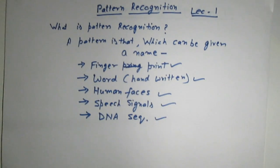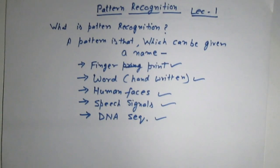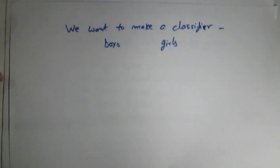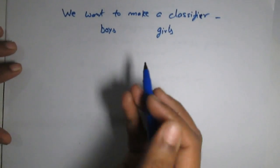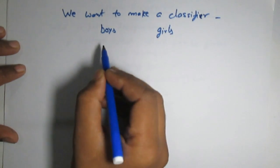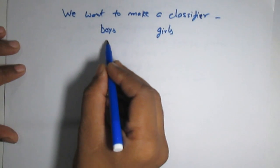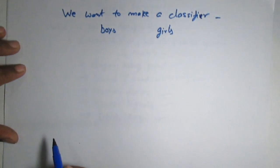Let us start our discussion with an example. Suppose we want to construct a recognizer which can classify a student either in boys or girls class. We want to make a classifier that can classify a student of a class either in the category of boys or in the category of girls.